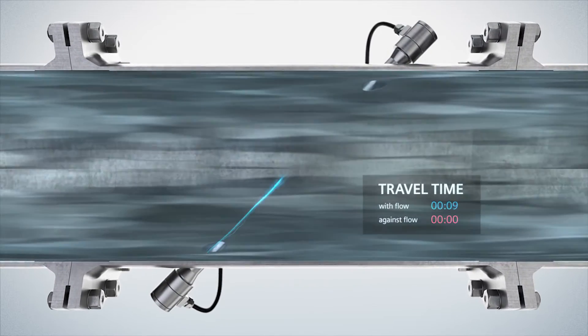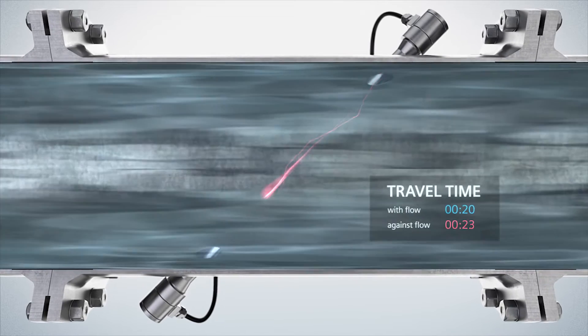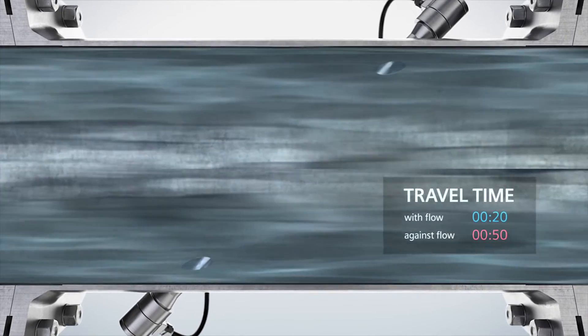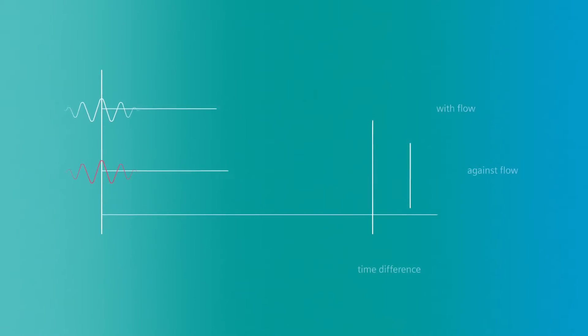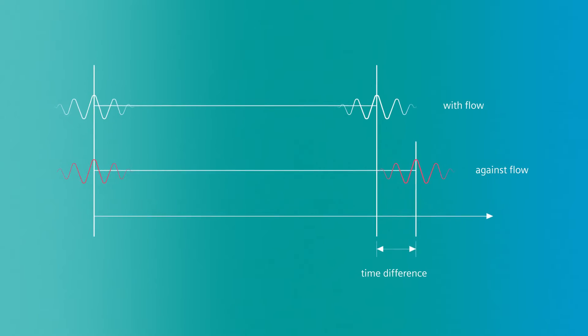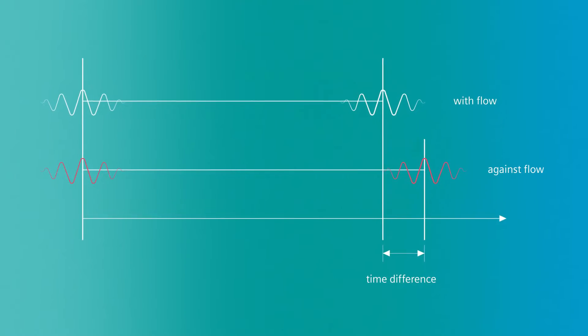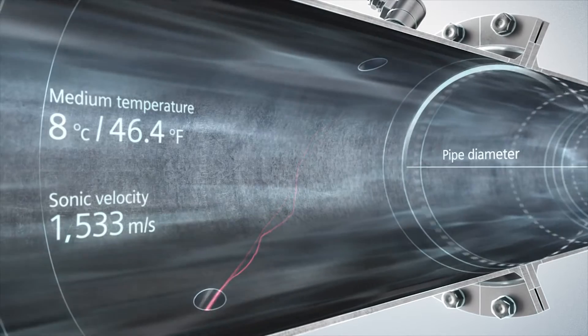When moving in the same direction as the flow, they travel faster than waves traveling against the direction of the flow. The higher the flow velocity of the medium, the greater the difference between the two transit times.